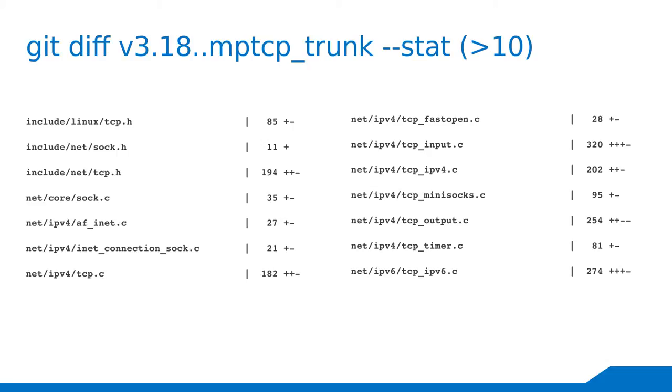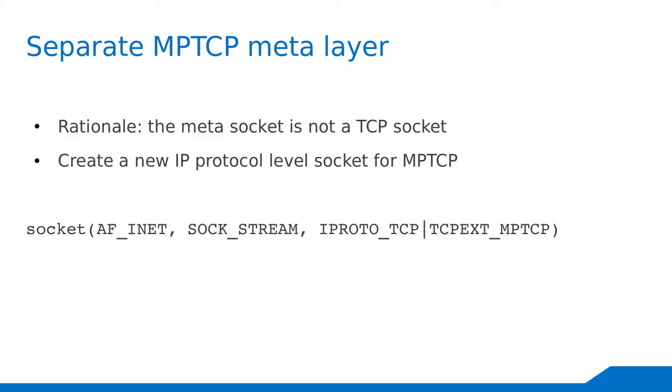Right now we have a work-in-progress model where we want to create a new protocol family for the meta socket and redesign the receive path — we'll let packets go to the subflow queue and then pull them out via our own MPTCP receive message implementation. The same approach applies to the send path: our own implementation that pushes packets down to the subflow level.